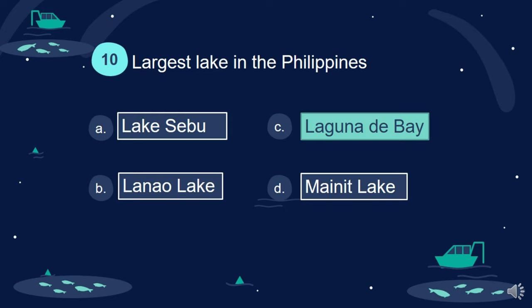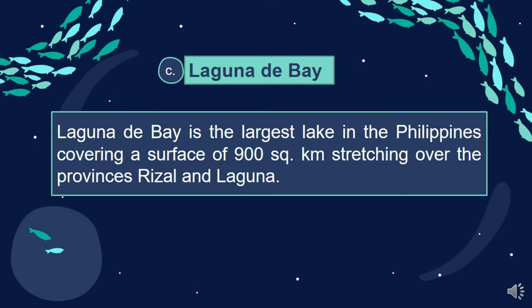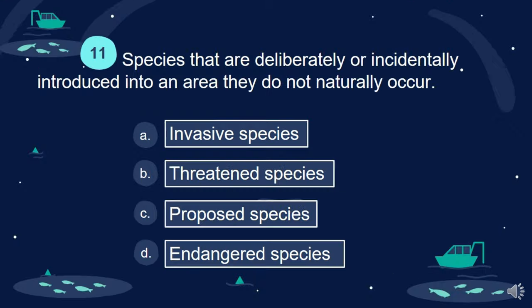Answer: C. Laguna de Bay. Laguna de Bay is the largest lake in the Philippines, covering a surface of 900 square kilometers, stretching over the provinces of Rizal and Laguna.